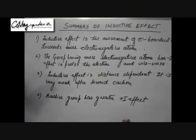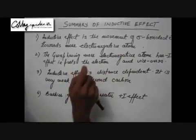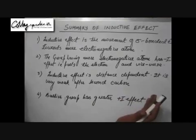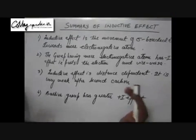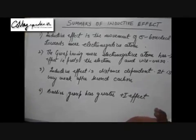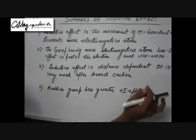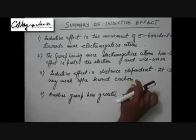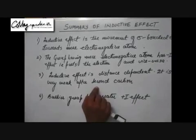Let's summarize what we have seen. Inductive effect is basically the movement of sigma-bonded electrons towards a more electronegative atom. Groups with more electronegative atoms pull up electrons from sigma bonds and are said to have a -I effect; groups with fewer electronegative atoms give up electrons and have a +I effect. Inductive effect is distance dependent — if there is a long chain of bonds, the cumulative pulling effect is mitigated by the time it reaches the original group. It becomes very weak after the second carbon and insignificant after the third carbon.